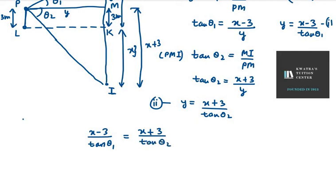So we get equation number 1 and equation number 2. So we get x minus 3 over tan theta 1 equals x plus 3 over tan theta 2. Now we take the reciprocal and take tan theta 1 and tan theta 2. So tan theta 2 is on the left hand side, tan theta 1 is on the right hand side, and here we have x plus 3 over x minus 3.